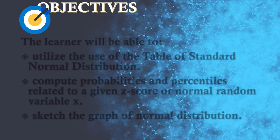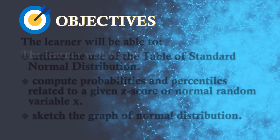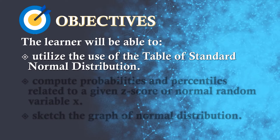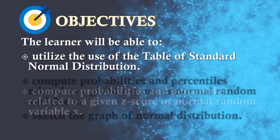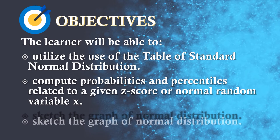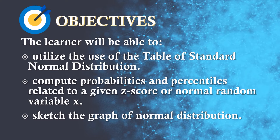For today's lesson, we have our objectives. The learner will be able to utilize the standard normal distribution table, compute probabilities and percentiles related to a given Z score or normal random variable X, and lastly, sketch the graph of the normal distribution.